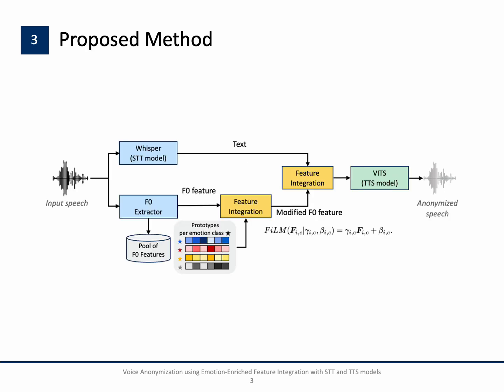Here you see our voice anonymization pipeline. It uses original speech to recognize linguistic content with the STT model Whisper. Instead of using bottleneck features from a speech recognition model, we use directly the text data, and we extract the fundamental frequency from the original speech. To augment the emotional expressiveness of the anonymized speech, emotion class prototypes are calculated and integrated. Using these enriched F0 features and text embedding, we synthesize the audio to produce anonymized speech, which still contains the linguistic content but no longer has the original speaker information.